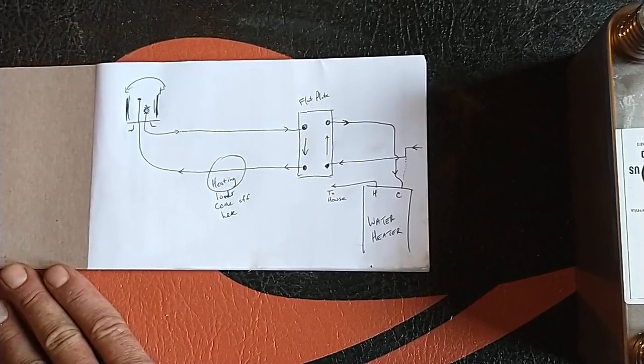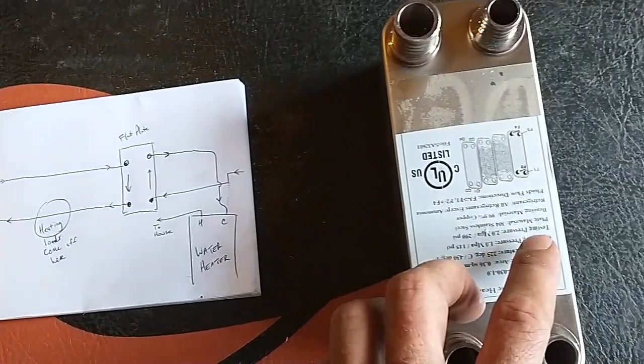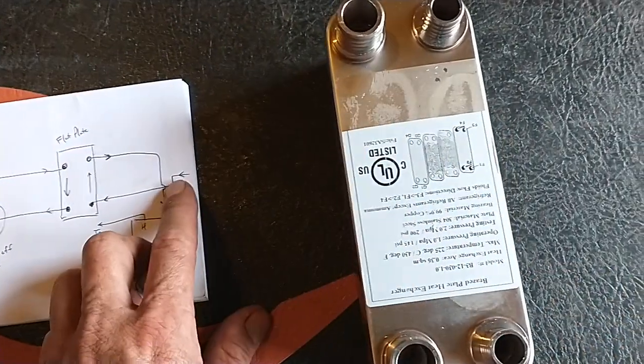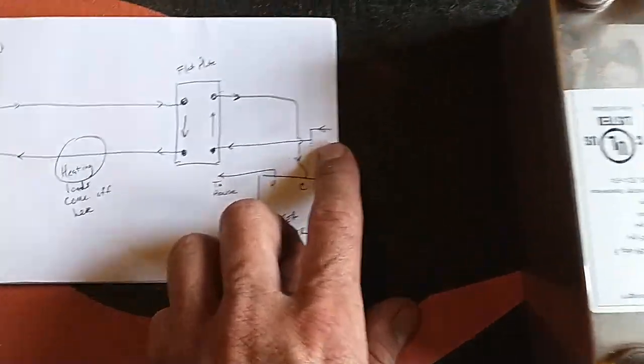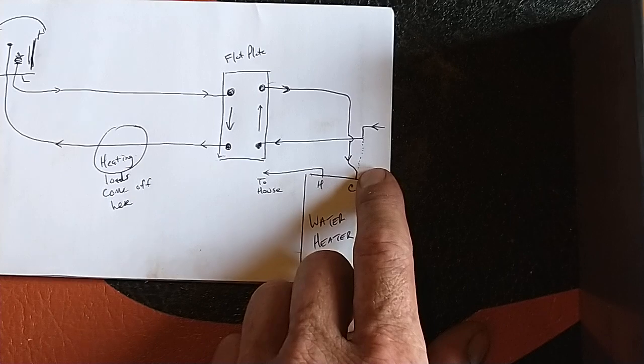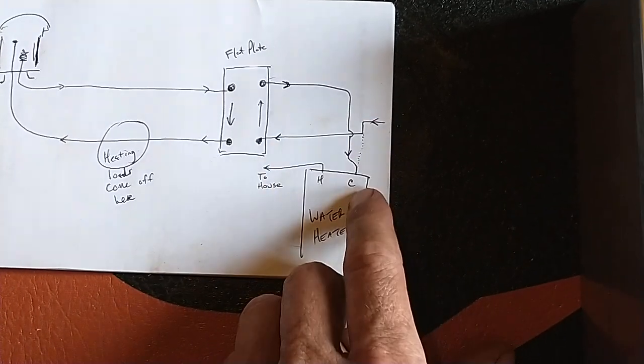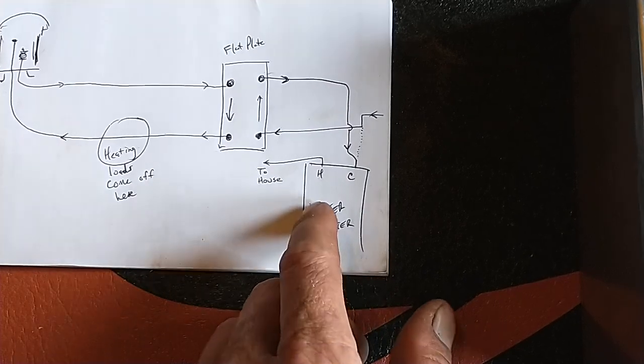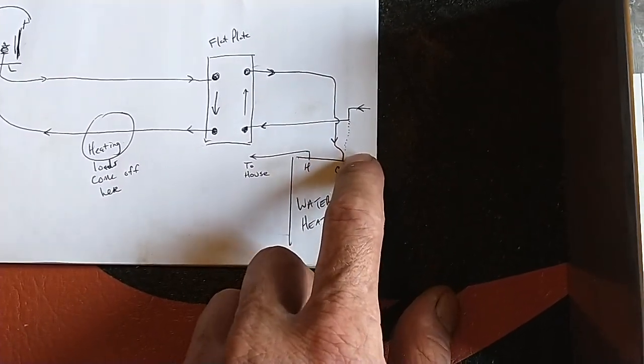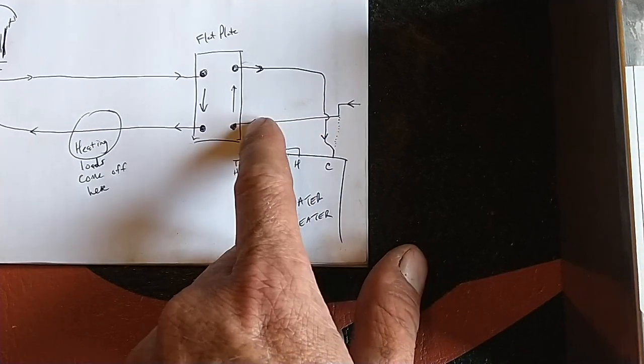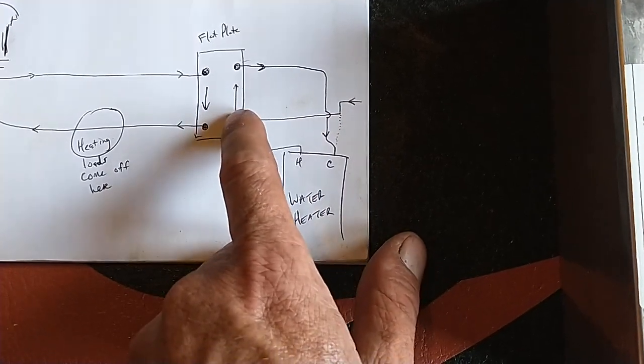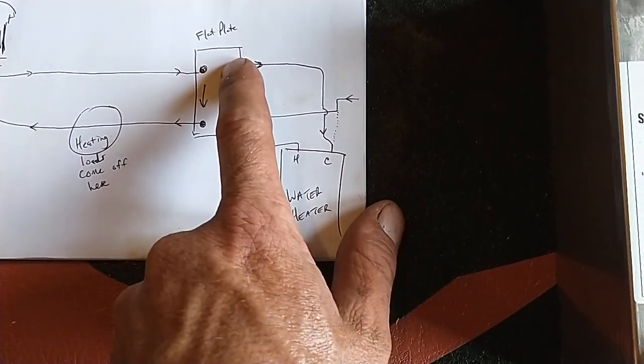Then on the domestic water side, the dotted lines would represent the old route. Domestic water would have went into the electric water heater, came in through the water heater, get heated by the electric elements, and out to the house. We would cut that off, route it over here through the flat plate in the opposite direction, exiting on the hot end where your incoming hottest water is.